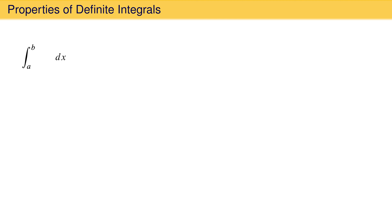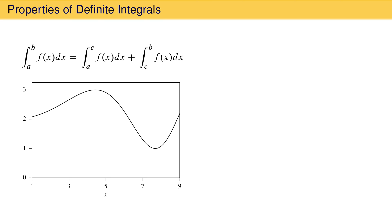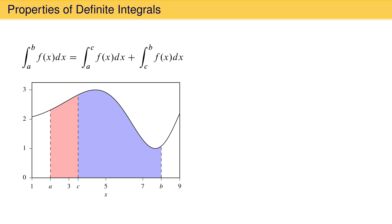One property is that the integral from a to b of the function f of x can be written as the sum of two integrals: one from point a to an intermediate point c between a and b, plus the integral from that intermediate point c to point b. This can be illustrated graphically with the function sine of 0.08x squared plus 2. The integral of this function between a and b is the area under the curve, which equals the sum of two portions: one from a to c and one from c to b. The point c can be anywhere between a and b.